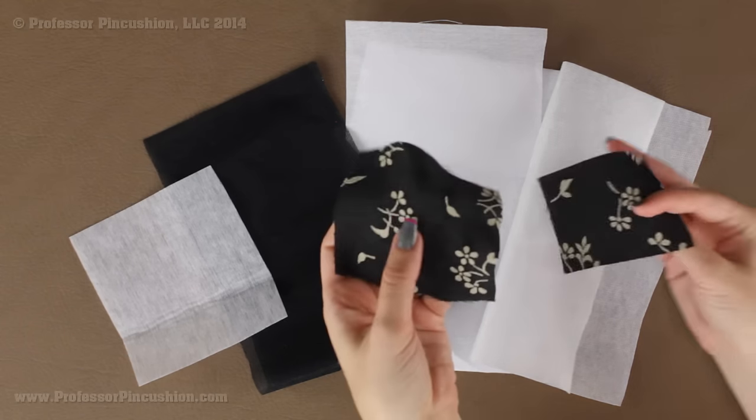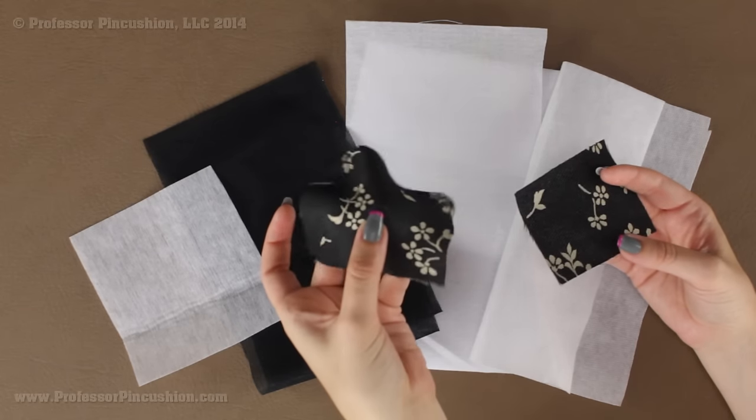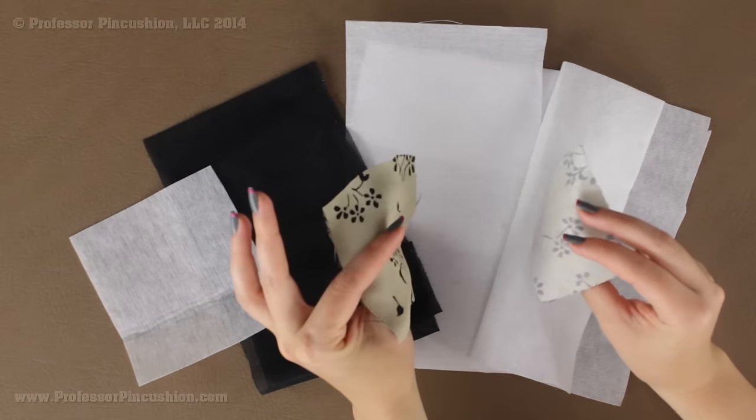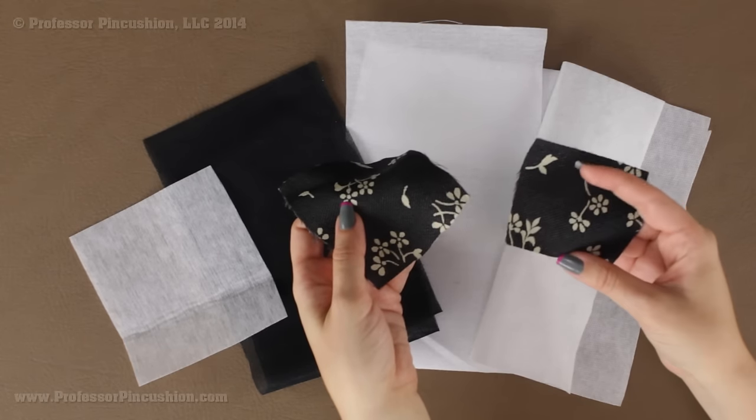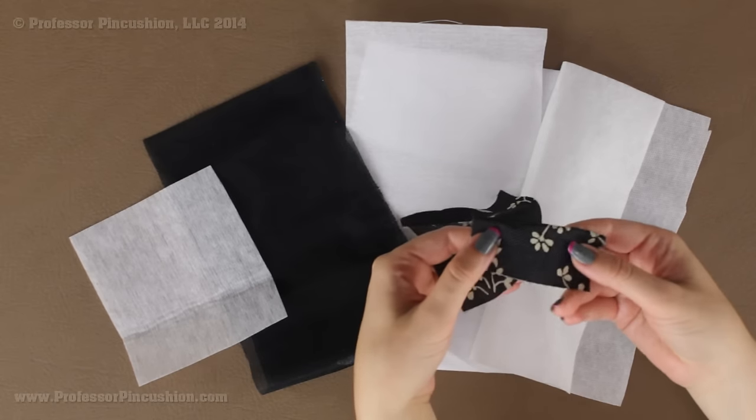I have two examples here. So this is just a polyester silky fabric. Now this one does not have any interfacing and you can see it's pretty flimsy. This one has interfacing on the wrong side. This is just a lightweight fusible interfacing but you can see the difference. It definitely has a lot more body to it and it's easier to create different shapes with it.